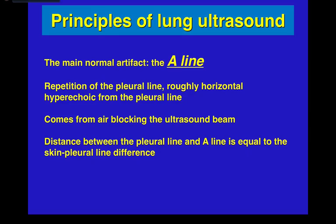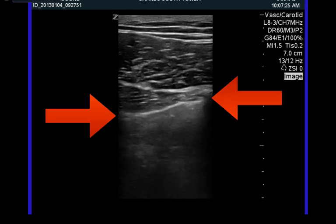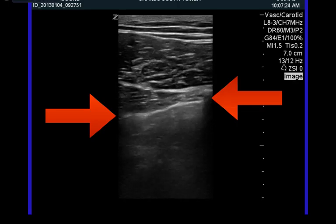The main normal artifact in normal aerated lung — or abnormally aerated lung — is the A line. It is a repetition of the pleural line, roughly horizontal and hyperechoic, arising from air blocking the ultrasound beam. The distance between the pleural line and the A line equals the skin-to-pleural-line distance because of physics. Keep an eye on where the arrows are and you're going to see lung sliding — I'll keep this slide up so you can gain a visual of what lung sliding looks like.